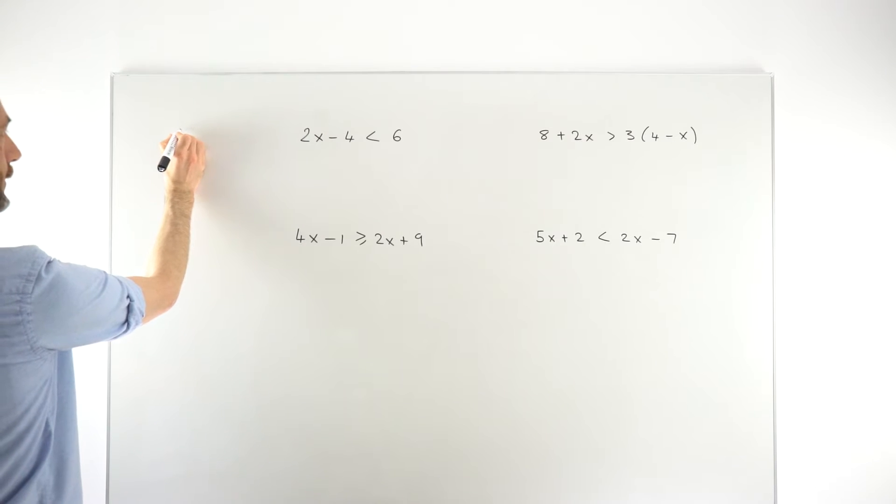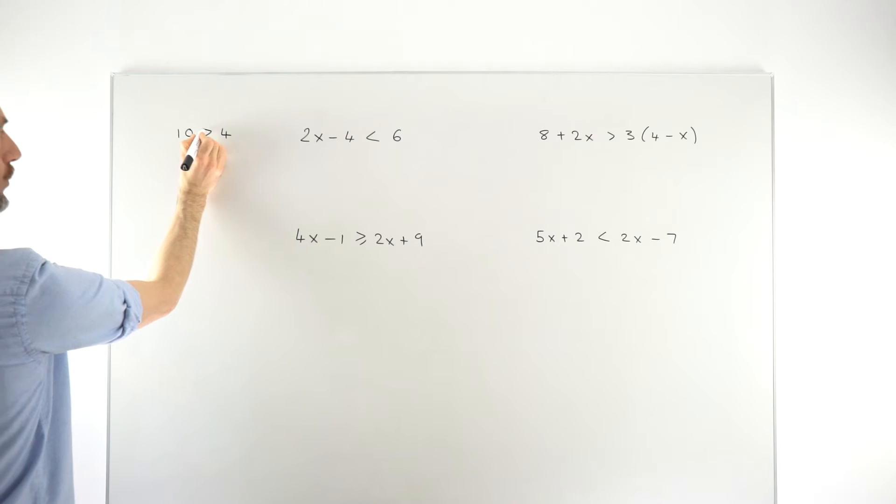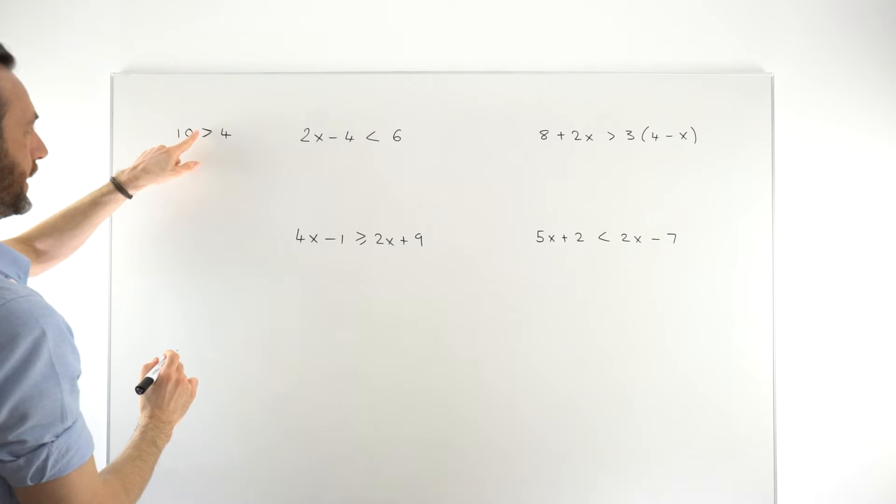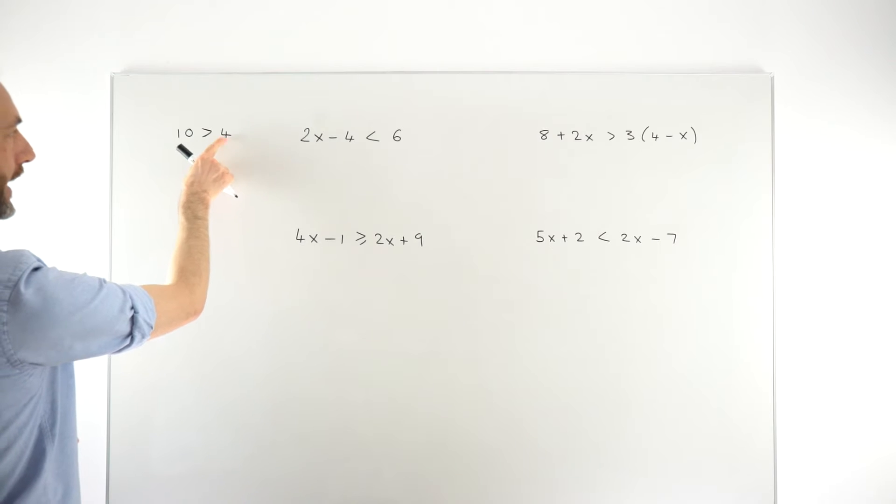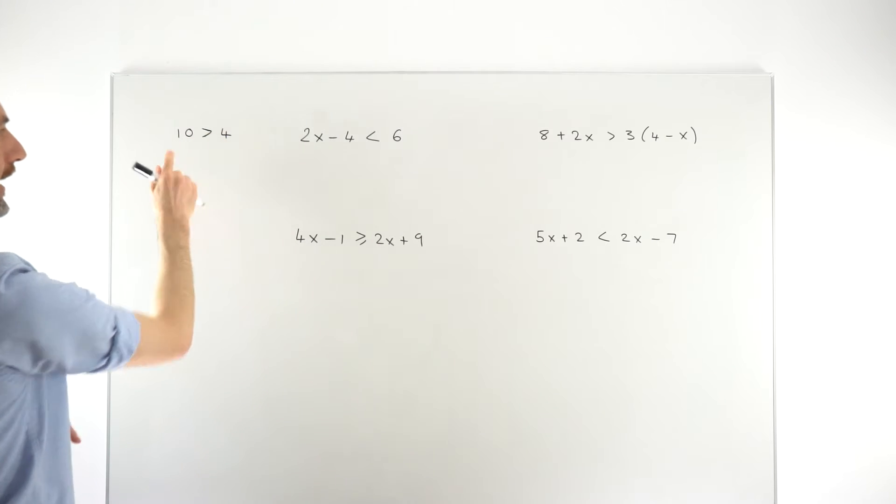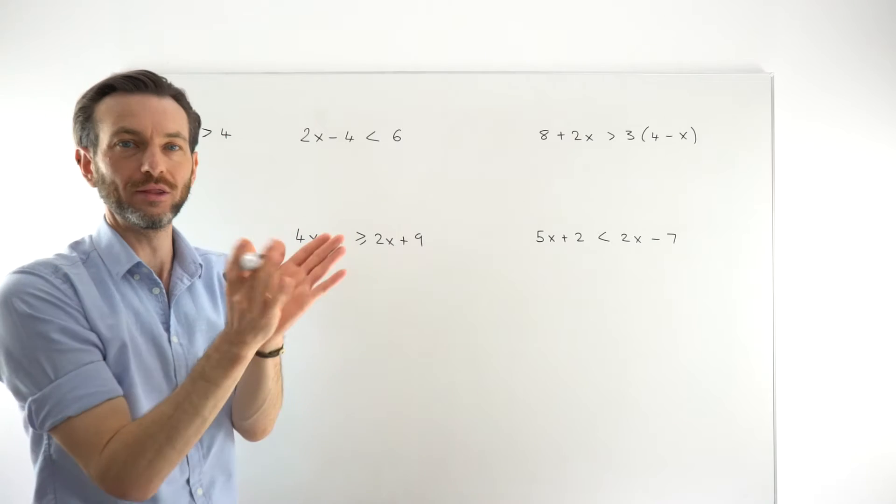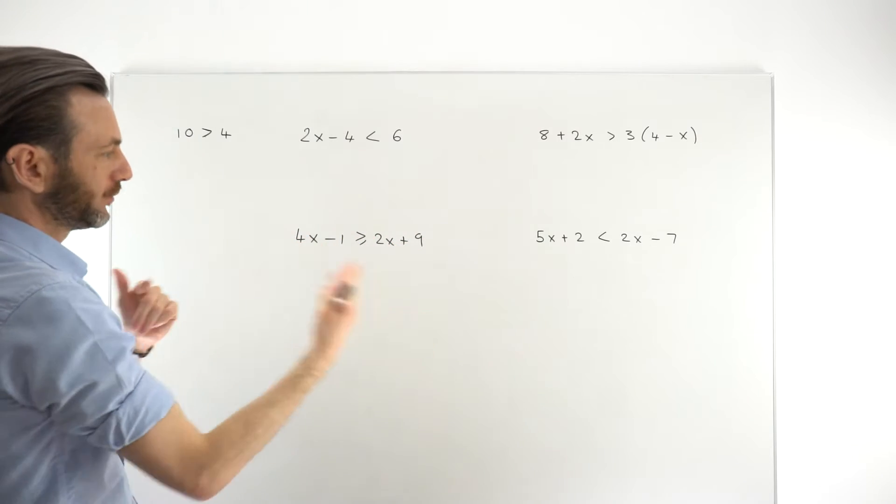We can say 10 is greater than 4 by writing it like this. The symbol going this way means greater than for the open end. Reading that left to right, we would say 10 is greater than 4. But you can also read it right to left by saying 4 is less than 10. The sharp end means less than, the open end means greater than.